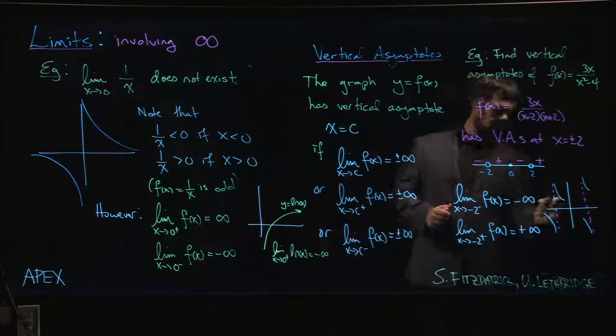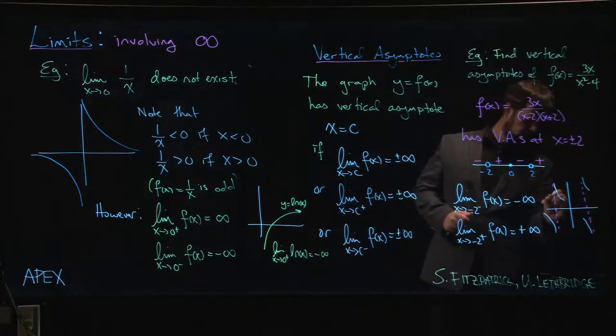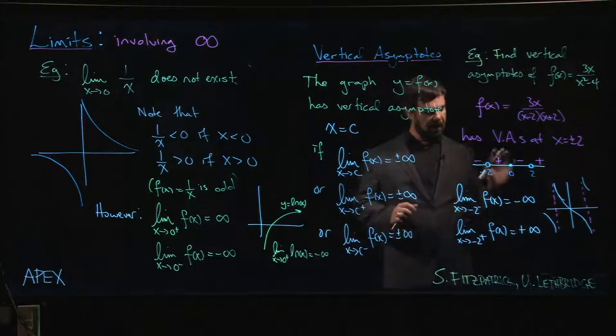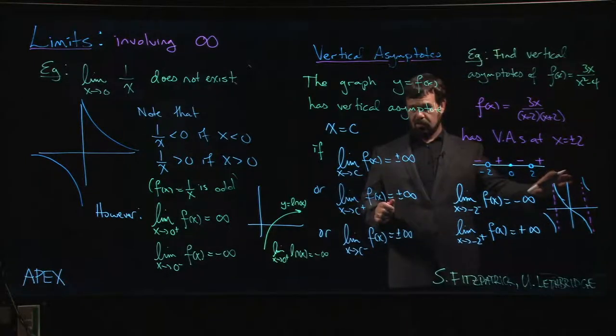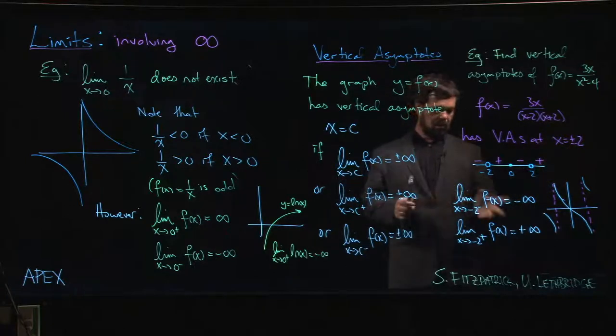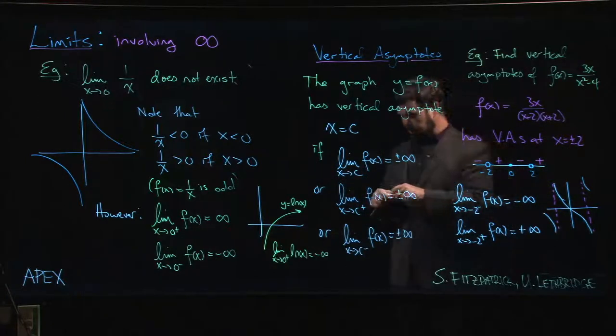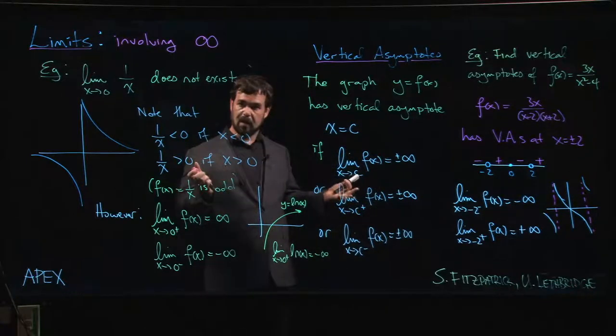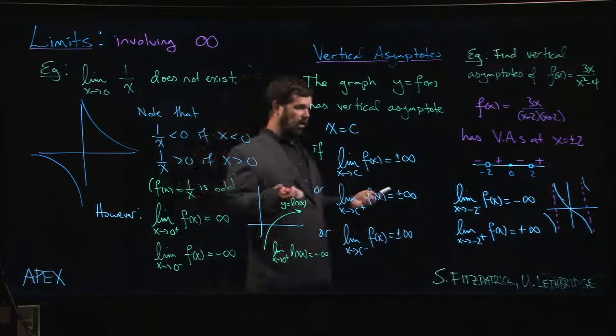And also, I have that intercept at zero. So I know that I probably have to pass through zero and do something like that. And in fact, I pretty much have the whole graph at this point. Even without looking at limits, but not doing any other calculus, not looking at derivatives or anything like that. I already have a pretty good idea of what's going on with the graph.